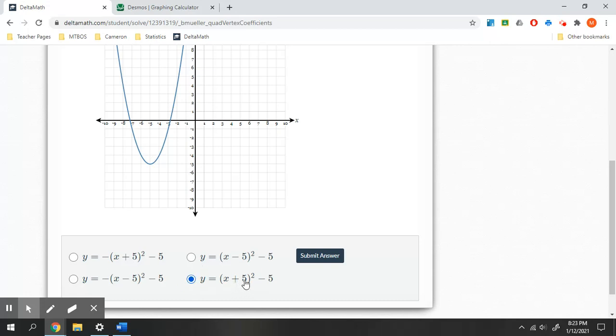Or sorry, left 5, down 5, and a positive a value. That's our correct solution.